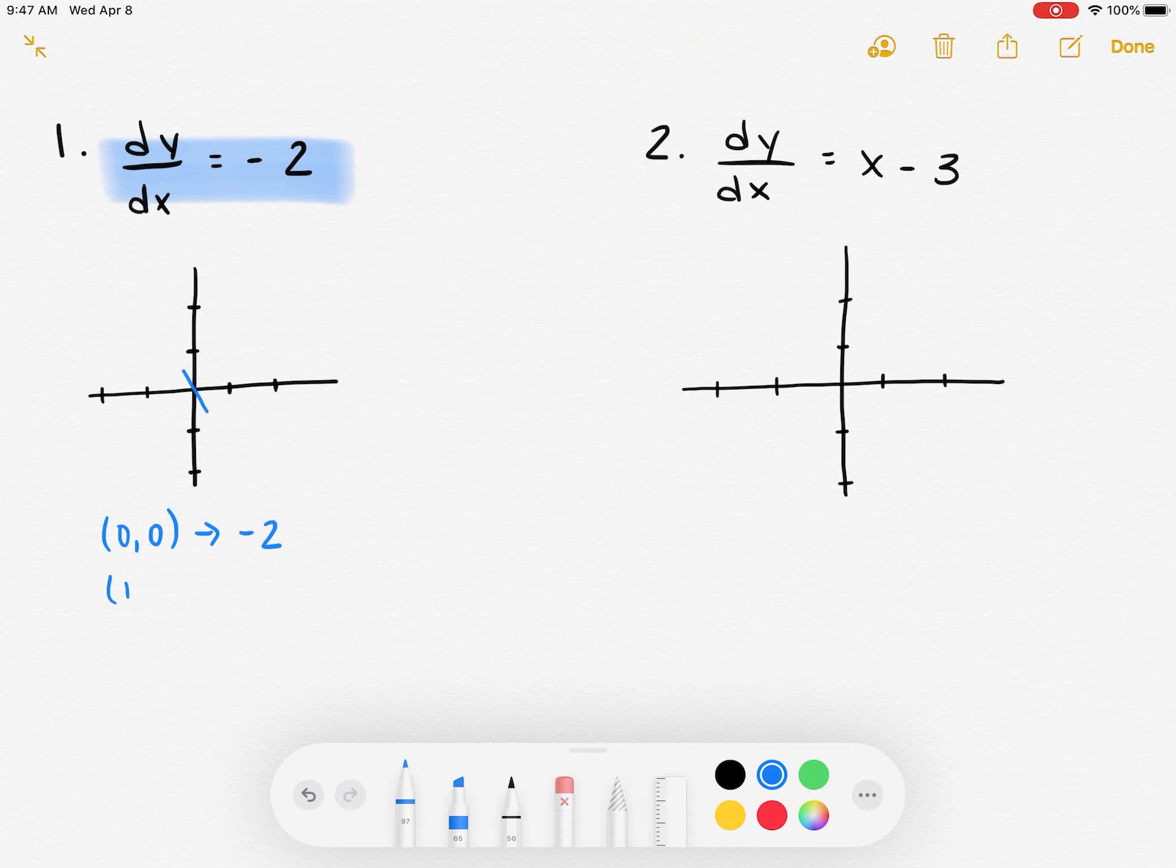So now for this graph, it doesn't matter what points I pick, the slope is always going to be negative 2, because there's no x and no y to plug into the graph. So anywhere I go to draw my slope, it's going to be negative 2, which means I'm looking for a graph that has all the same lines on it that looks like this. That would be your answer to the first one.